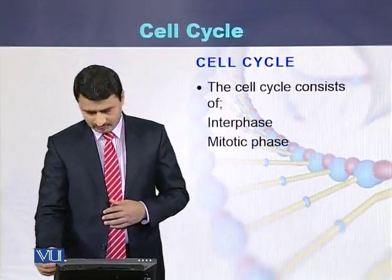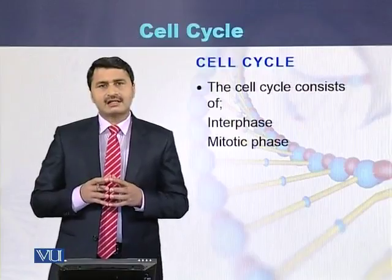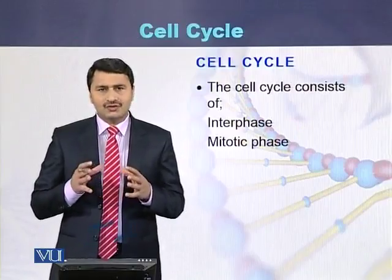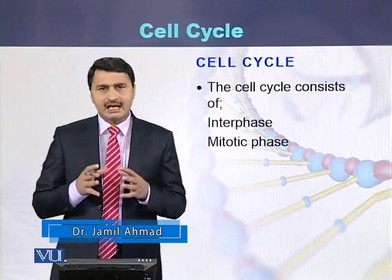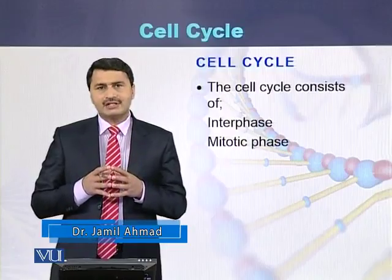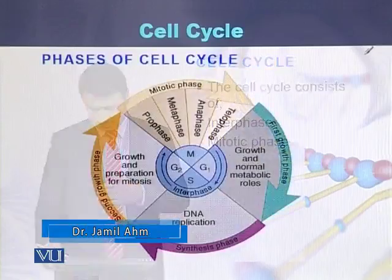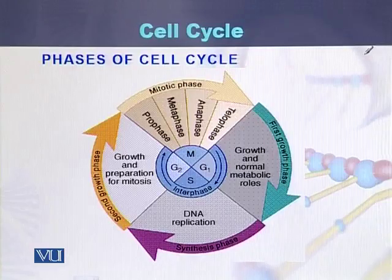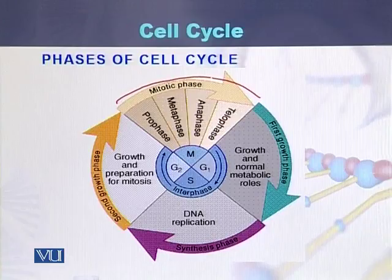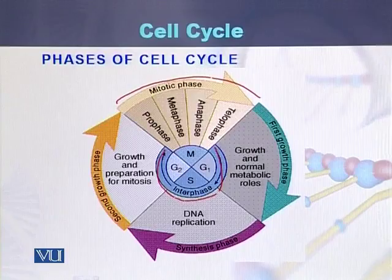The cell cycle consists of two phases: one is called interphase and the second is called the mitotic phase. As seen in the diagram, there are two phases — the mitotic phase and the interphase.